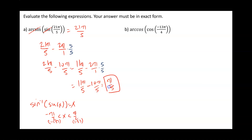Now, pi over 5 is between negative pi over 2 and pi over 2. You can verify that by converting this into a decimal form of radians. So this is going to be our answer.